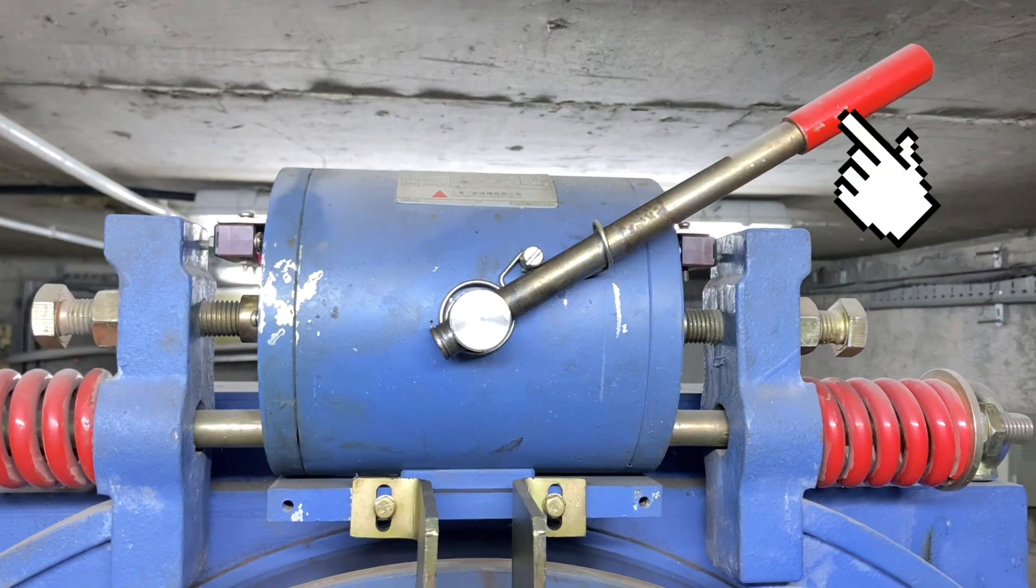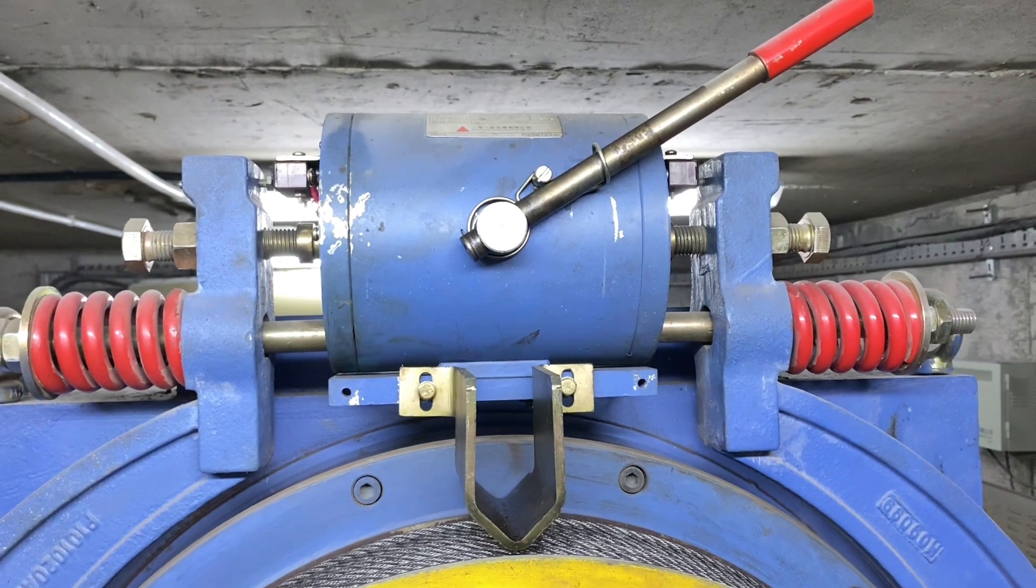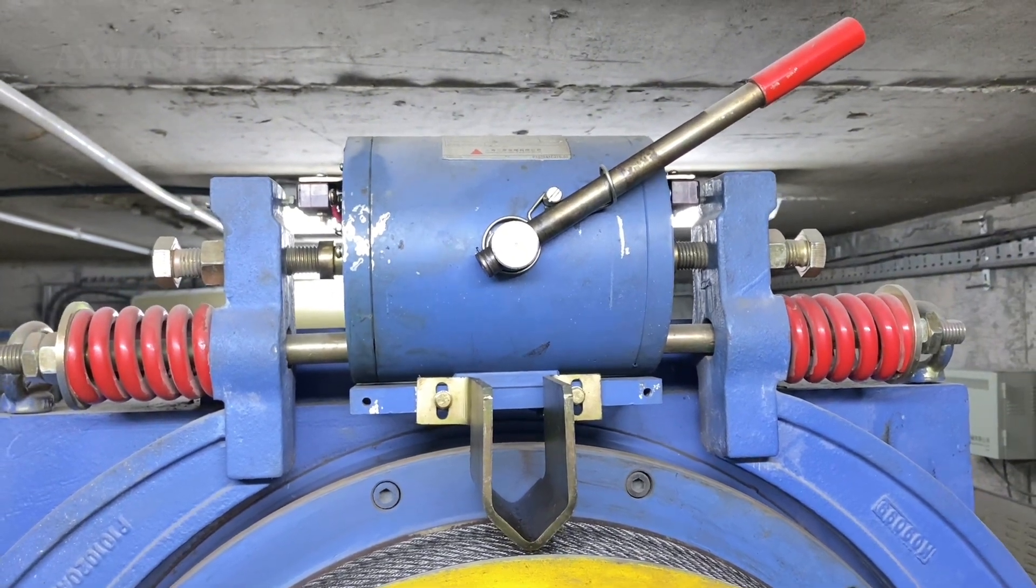This is the handle, which is used for manually releasing the brake. Before using the handle, you must ensure to turn off the power. Normally, these handles are used for emergency rescue services.